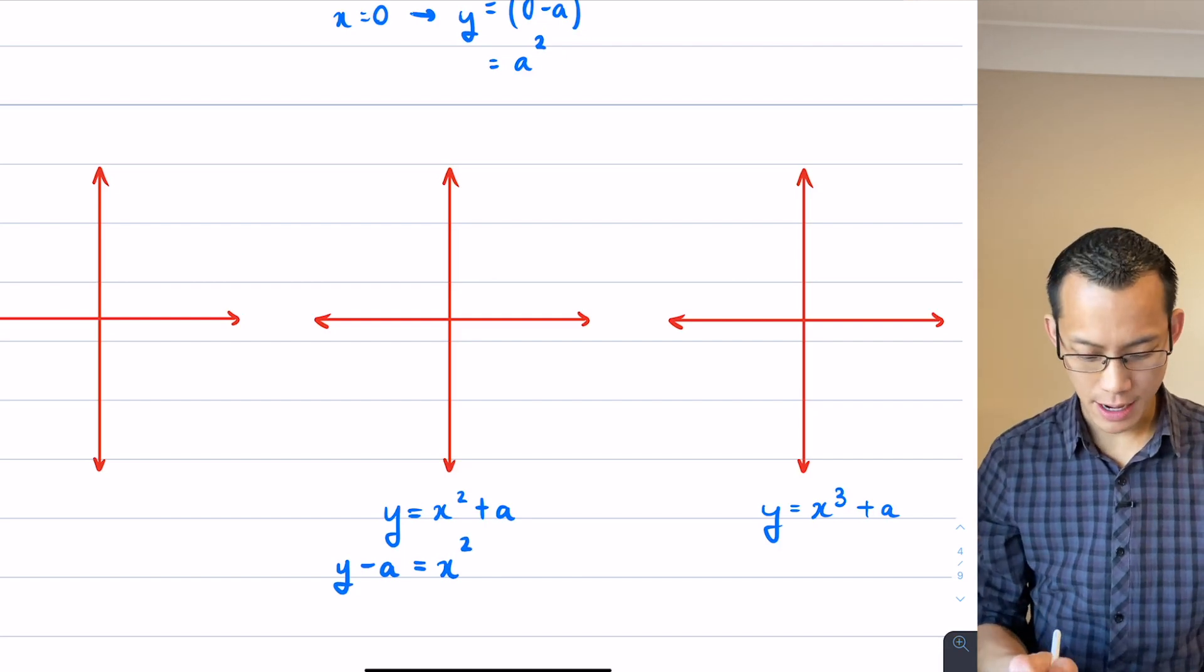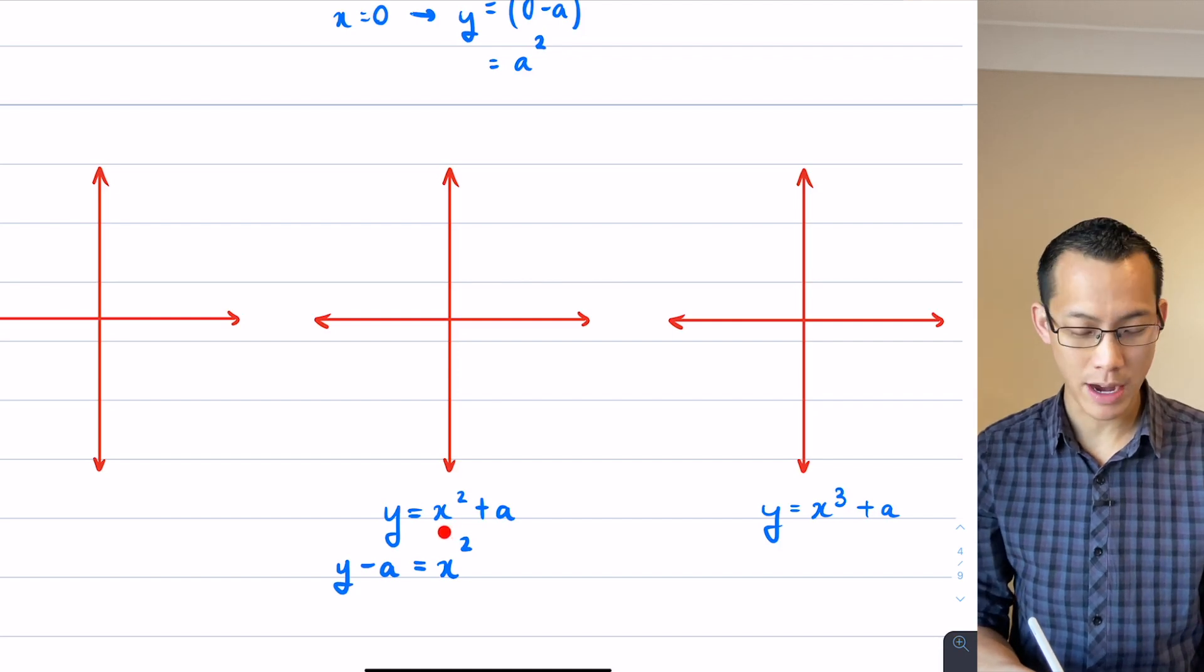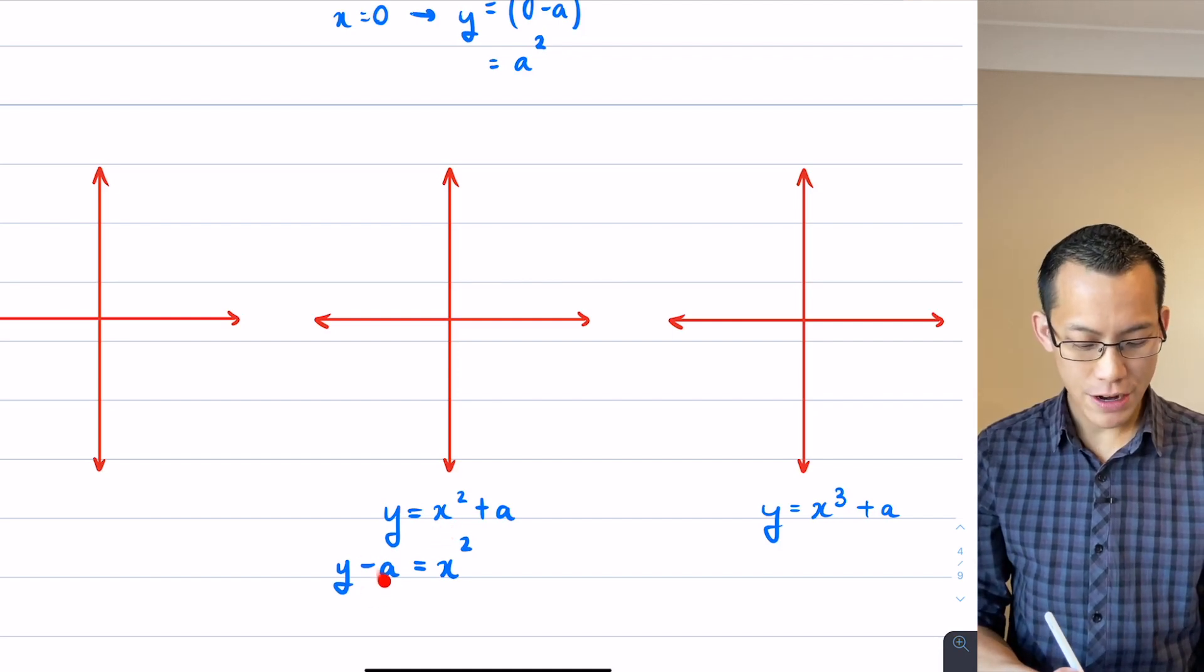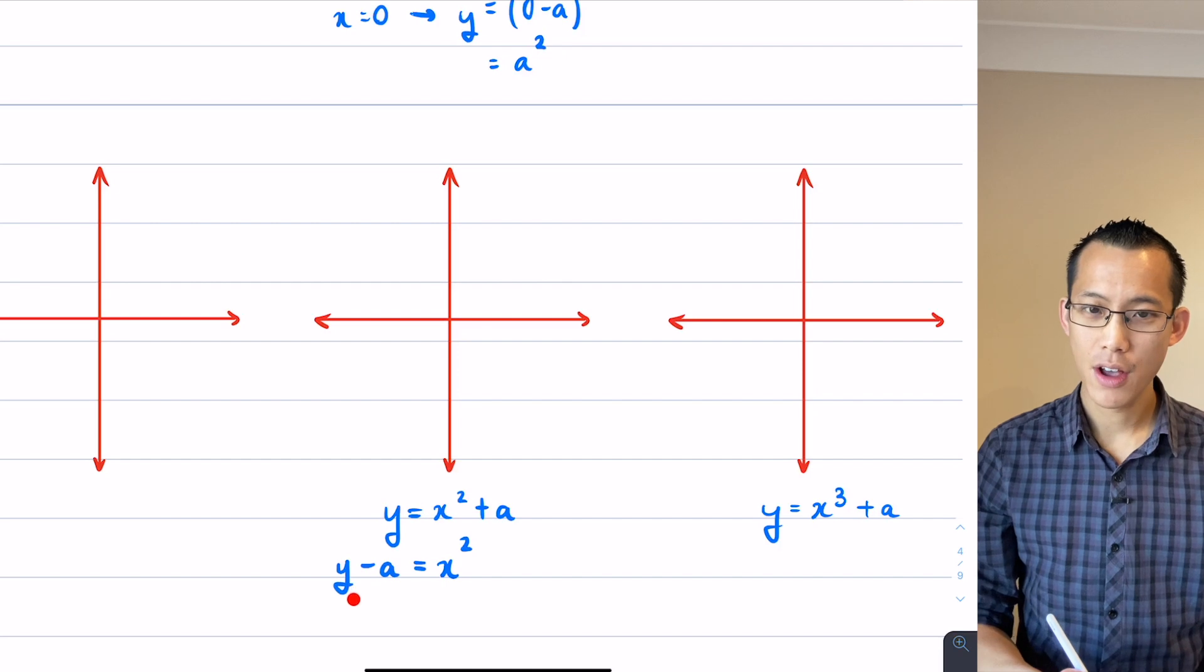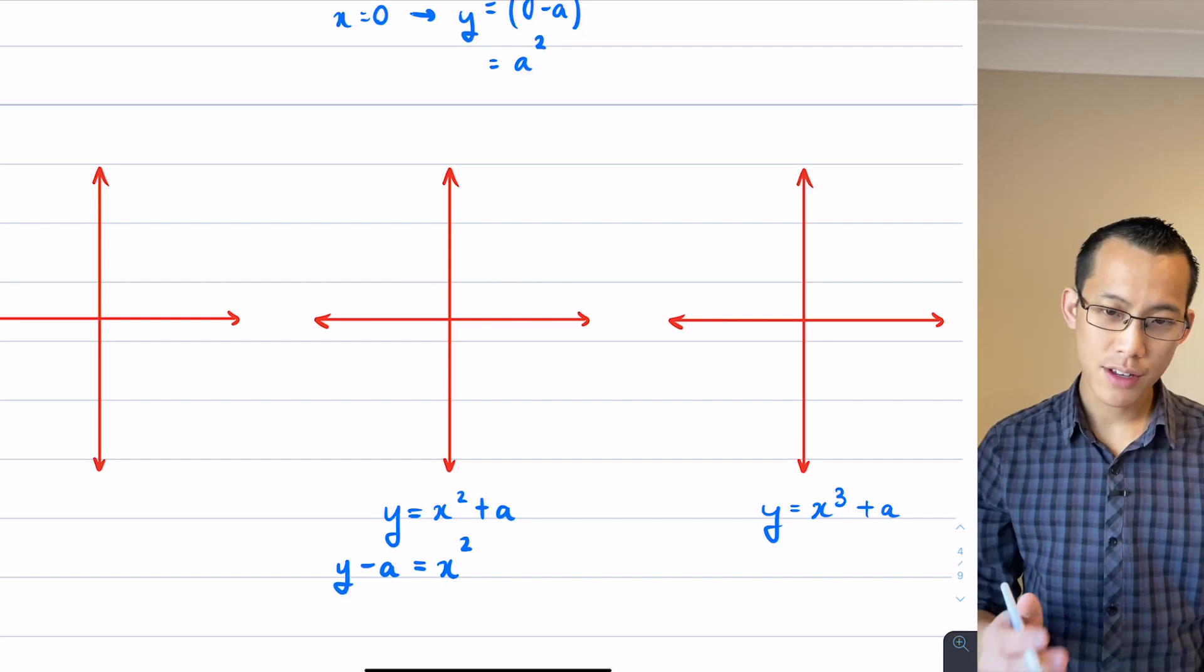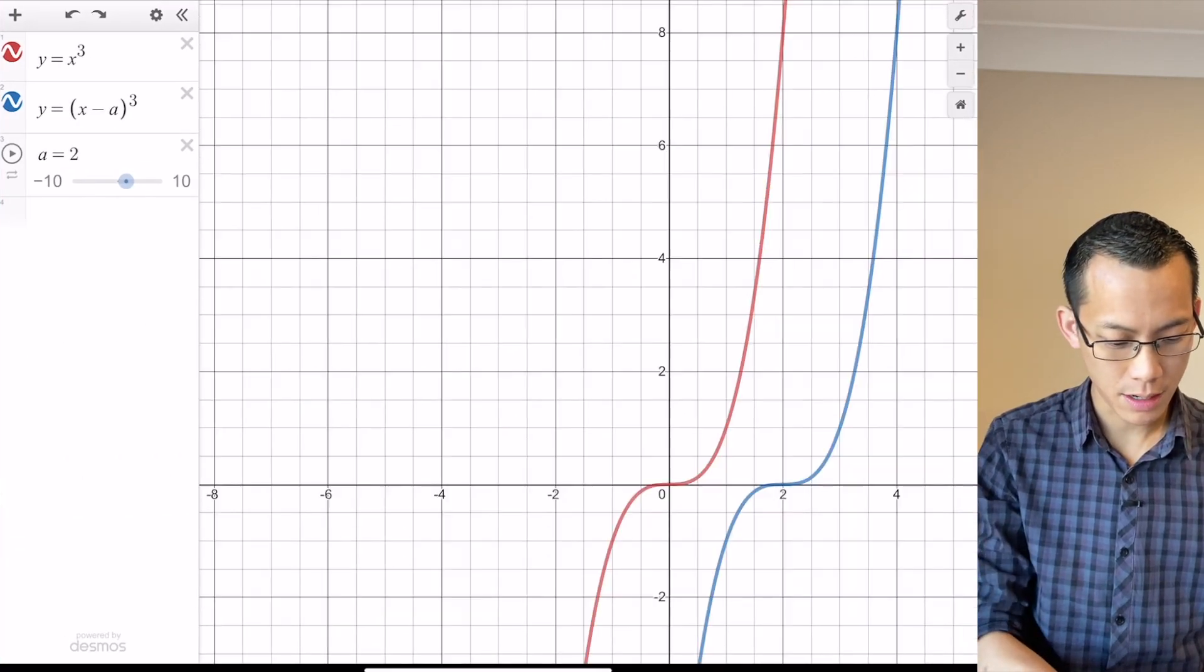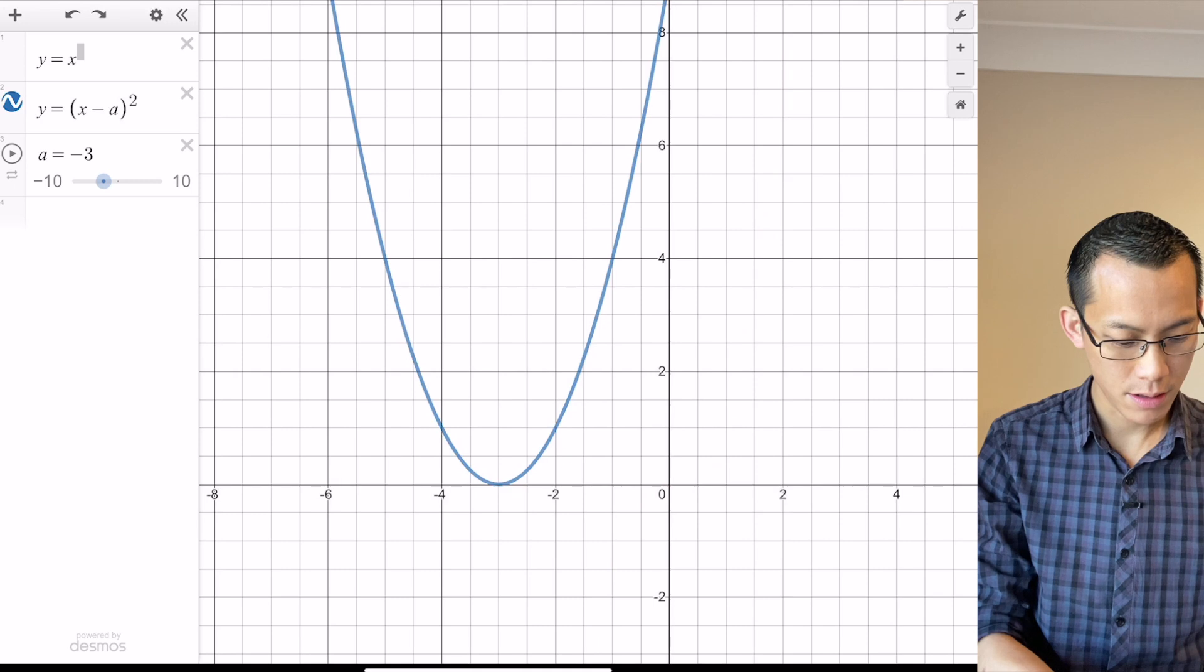What this shows you here, you see the A is not attached to that X and it's not being squared or anything like that. This A really belongs on the left hand side with the Y. This is a vertical change. And so you can see here, if I go over now, let's come back to Desmos and I'm going to undo, go back to squared. There we go.